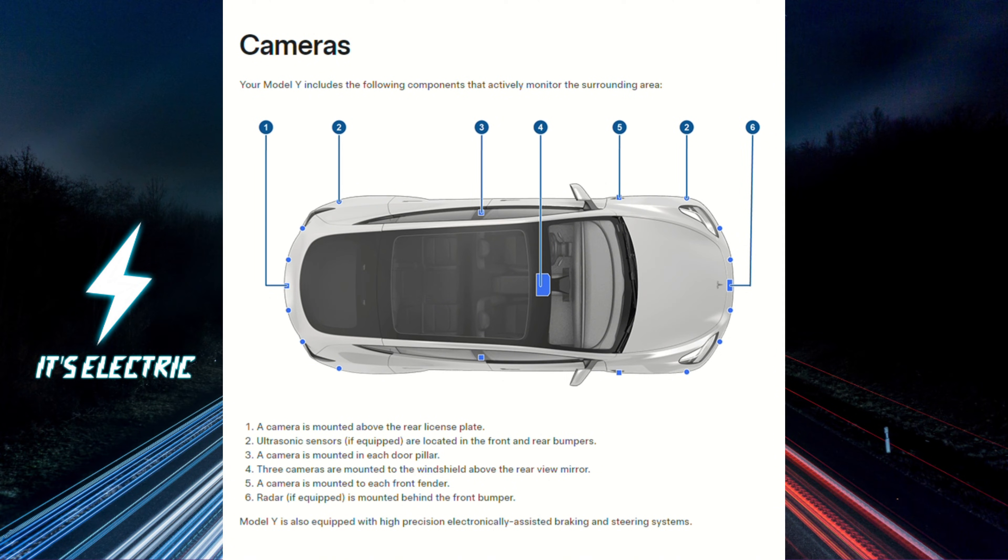A camera is mounted above the rear license plate. Ultrasonic sensors, if equipped, are located in the front and rear bumpers. A camera is mounted in each door pillar.